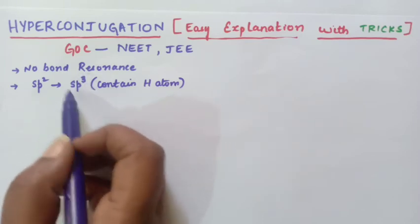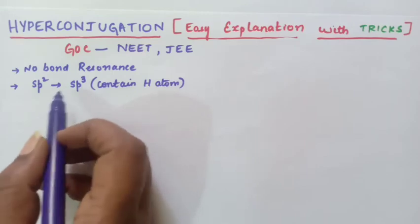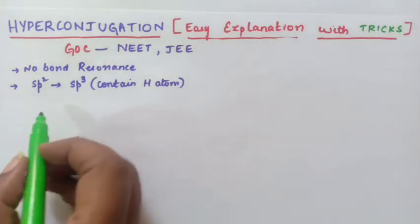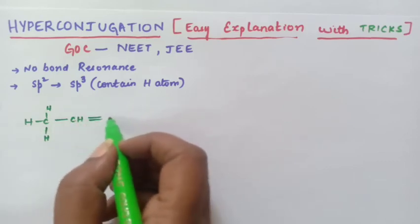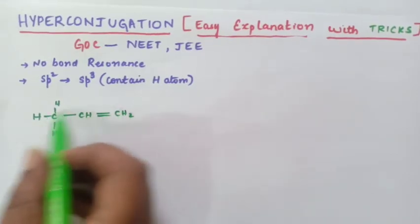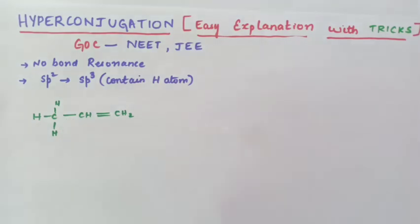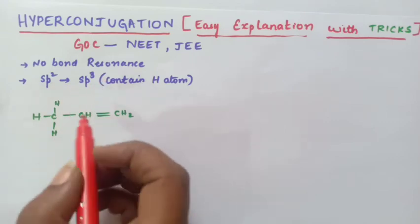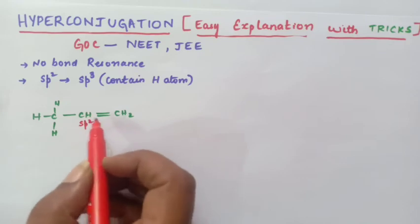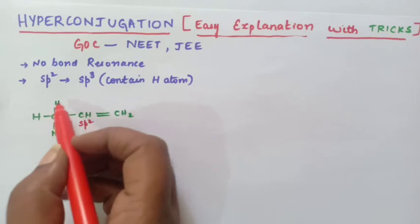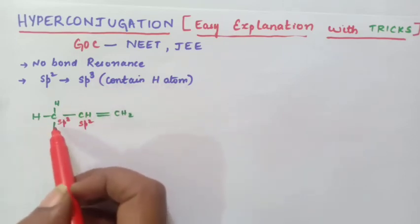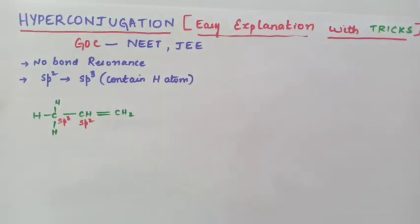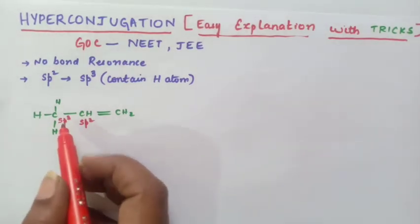The SP2 carbon should be attached to SP3 carbon and it should be having a hydrogen atom. Let us take an example and see how hyperconjugation takes place. So here there is a double bond and a single bond — alternating double and single bond. To check for hyperconjugation, you should see whether SP2 carbon is attached to SP3 carbon. Here this carbon is SP2 carbon and this will be SP3 carbon, and to this SP3 carbon you can see 3 hydrogen atoms are attached. Therefore, this molecule will undergo hyperconjugation.